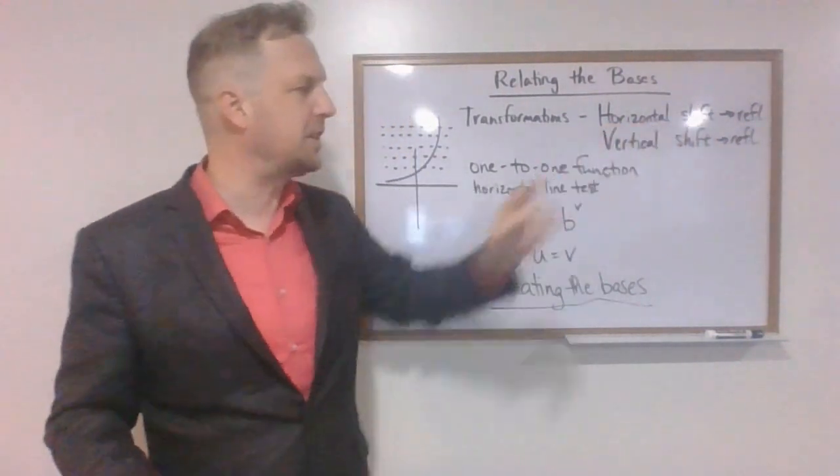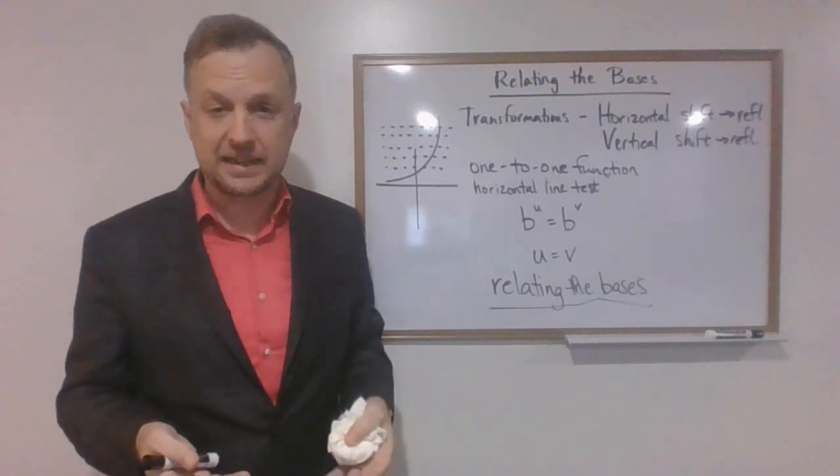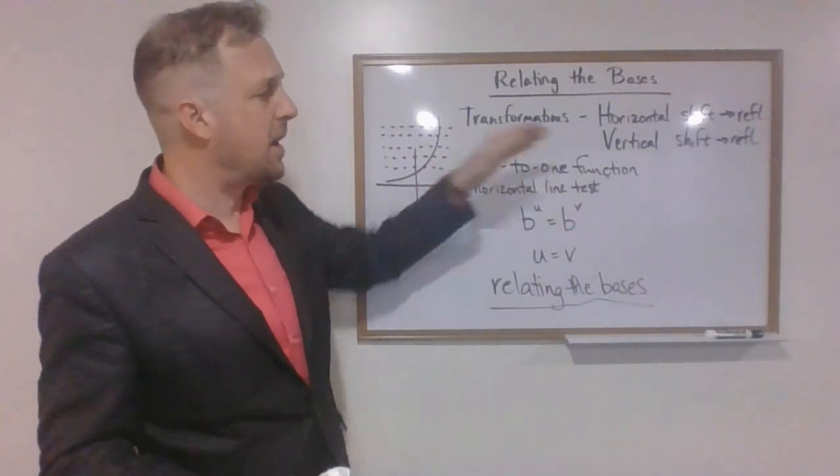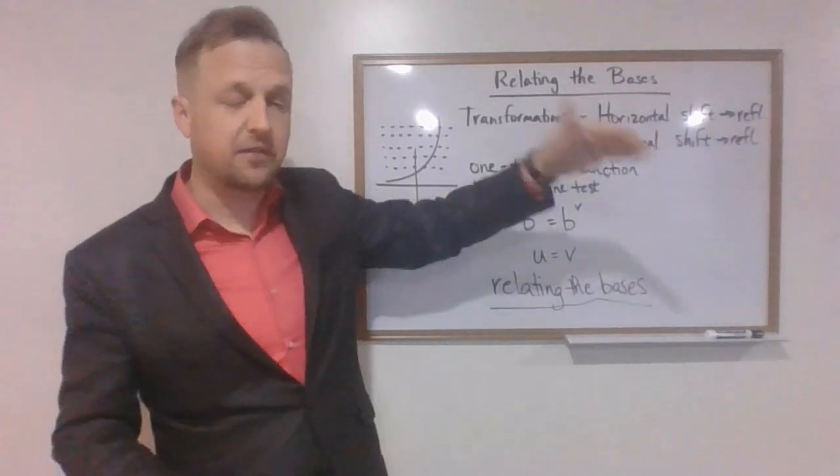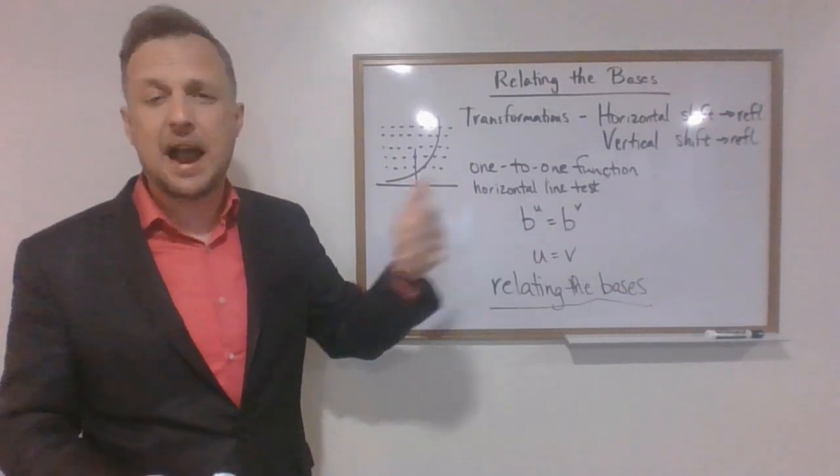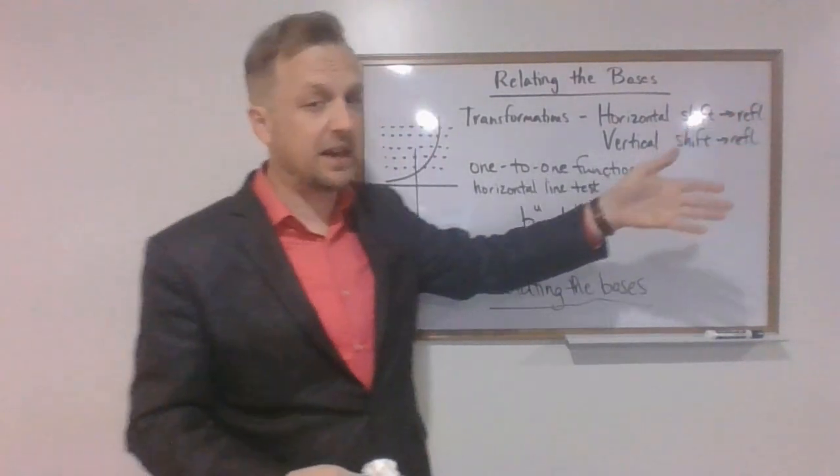In general, we're going to handle all of our horizontal shifts and reflections. In other words, everything that involves the x, we're going to do that first. When I say horizontal shift, that's going to be the first thing we do. Remember, that's represented by c. It's either adding or subtracting something to our exponent. And then we're going to do our reflection.